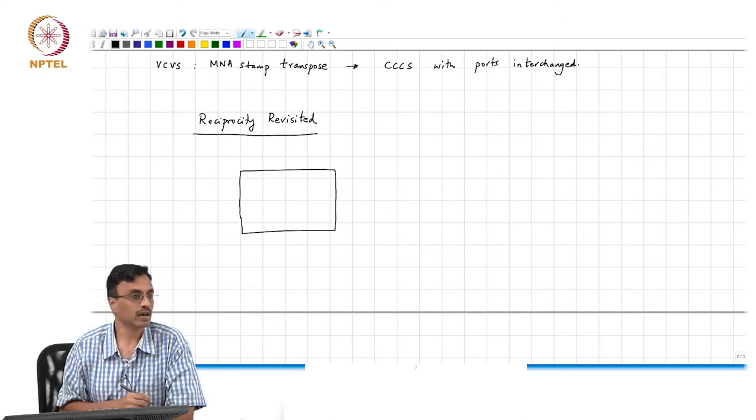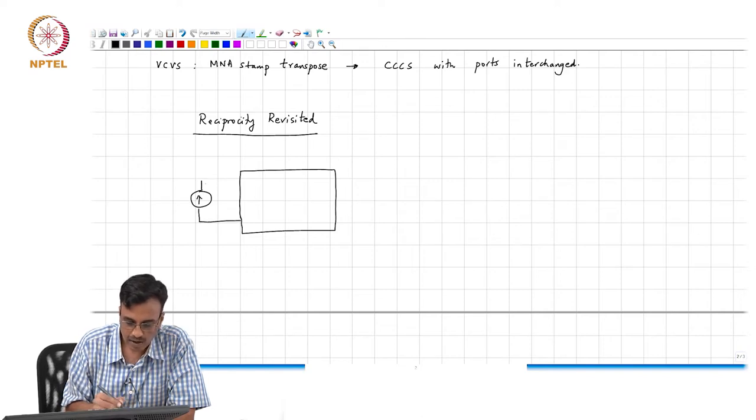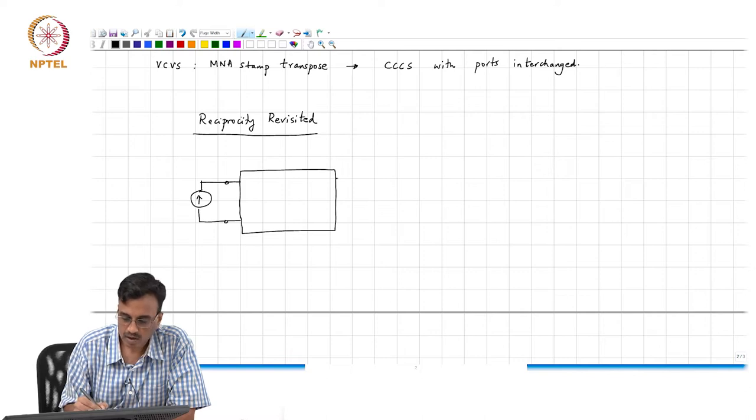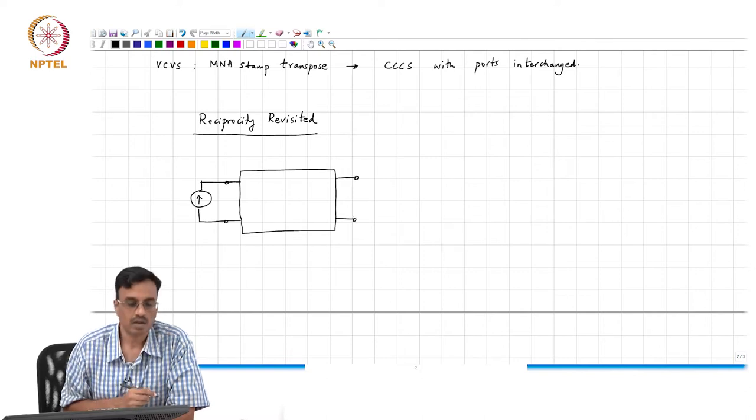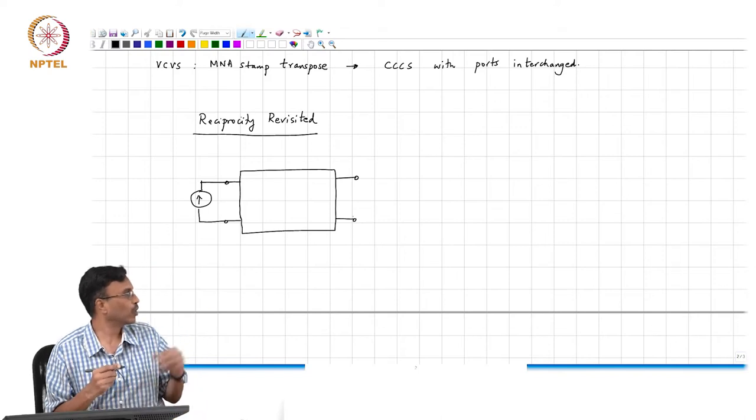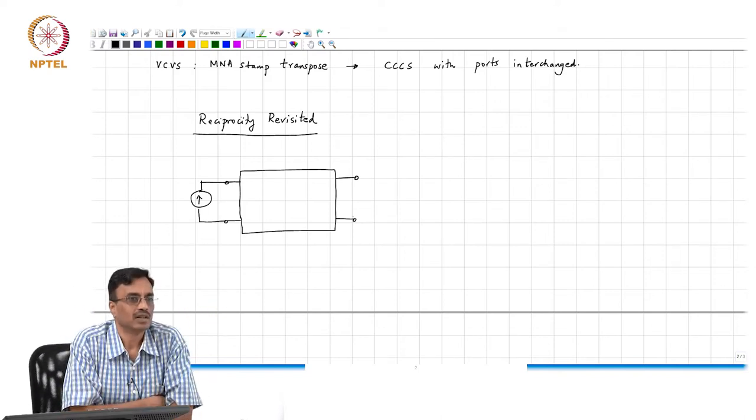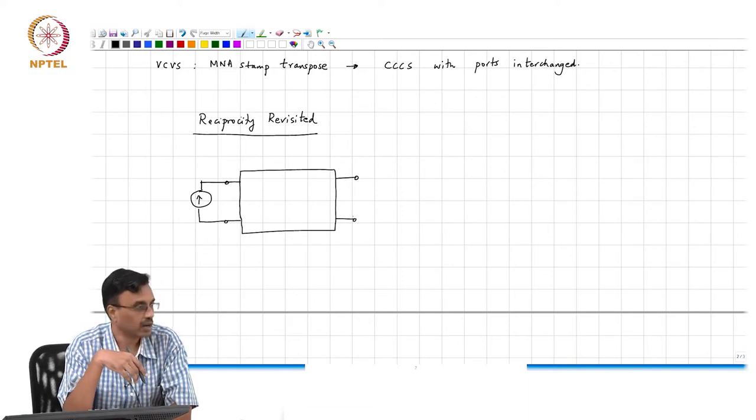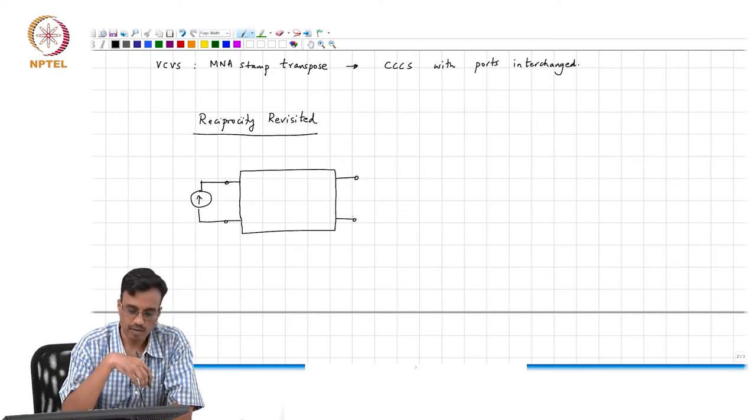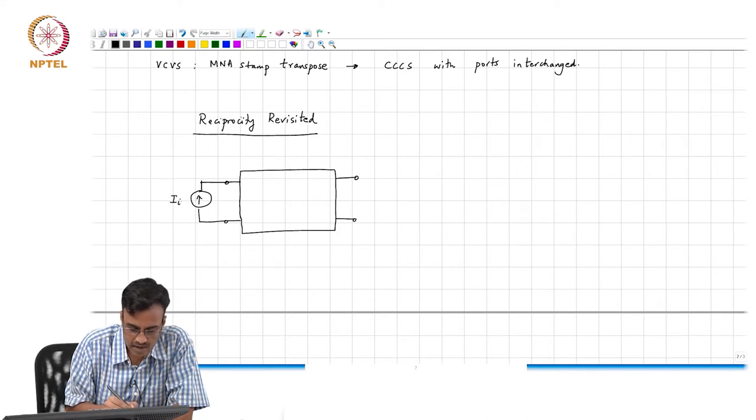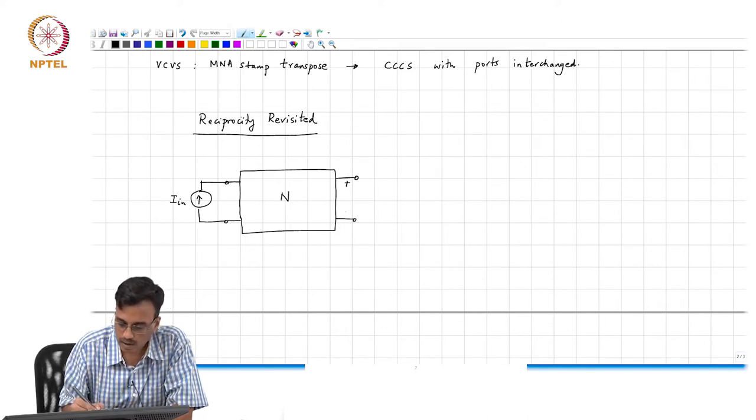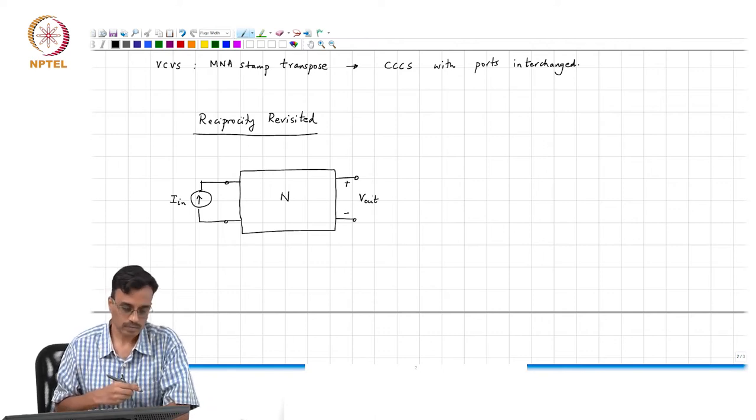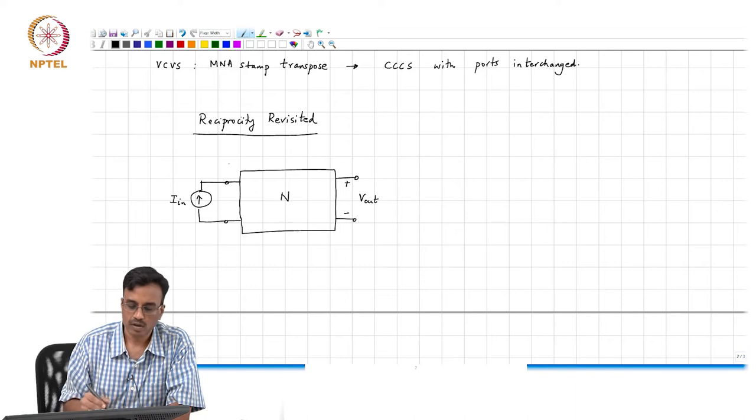Let us say we have a network here, and I am going to do simply a current input voltage output system. You can go ahead and do the same math for voltage input current output and any of those other combinations that we often encounter.